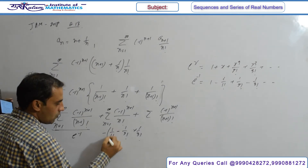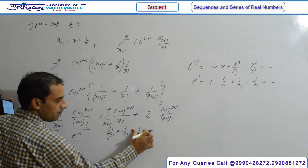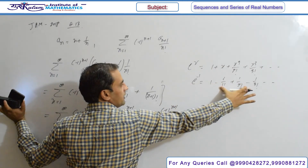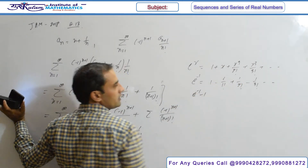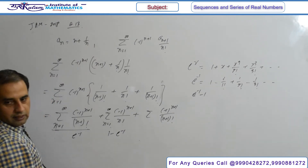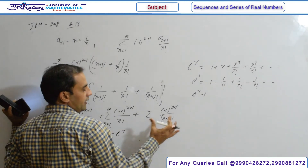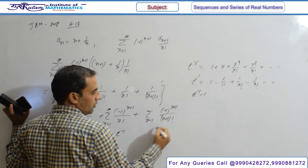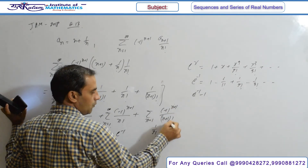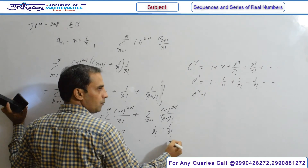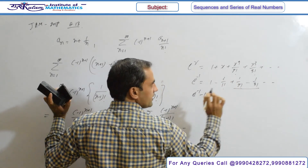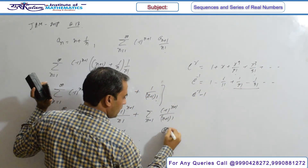Taking minus sign common, this becomes minus-plus pattern. So this value represents: taking it to one side, the value is e^(-1) minus 1, meaning this quantity is basically 1 minus e^(-1). For the third summation, n=1 gives 1/2!, n=2 gives -1/3! and so on — starting from 1/2 factorial. The 1 and 1 cancel out, so this represents e^(-1).